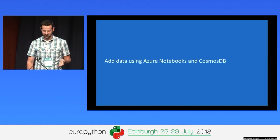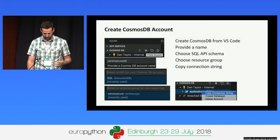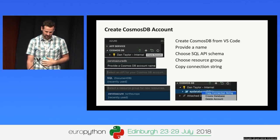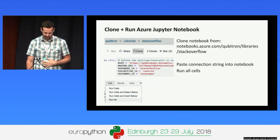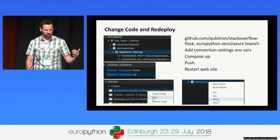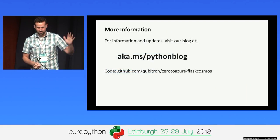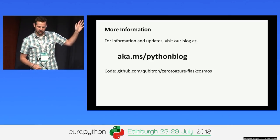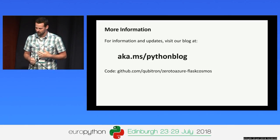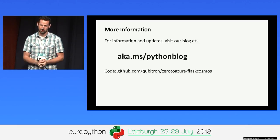You weren't expecting that to work, were you? Thank you. Just a quick recap and we'll wrap up. We created the Cosmos DB account from within the Azure extension, ran code in our Jupyter Notebook to push that document into Cosmos DB, added environment variables to our application settings, rebuilt the container, pushed and restarted. Thanks for coming to the talk — the code is available including slides and everything at this GitHub URL. If you want to know more about what we're doing at Microsoft with Python, aka.ms/pythonblog. I'm available here if you have more questions. Thank you.